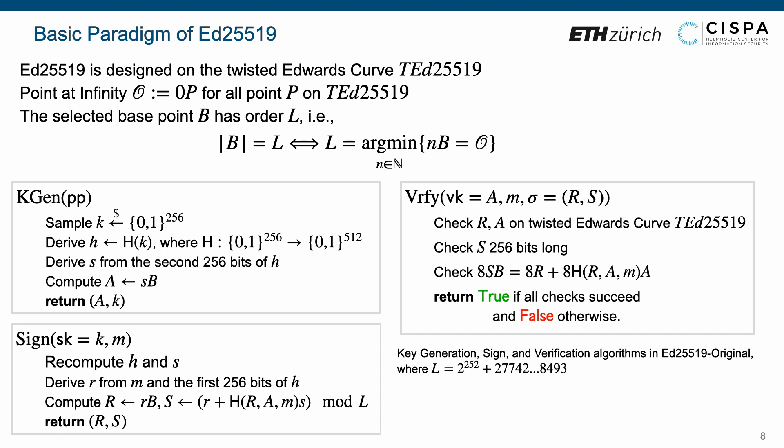The verification algorithm upon verification key A, a message M, a signature sigma, denoted by a pair of R, S, first checks whether points R and A both are on the curve TED25519.